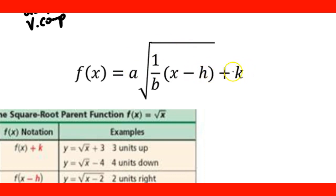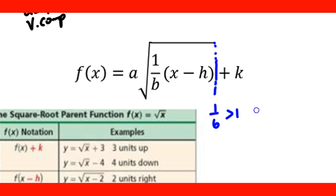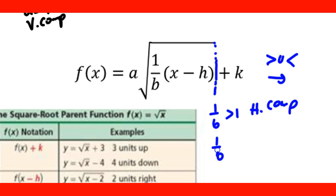One thing to note is that k is not underneath the radical. Now for the 1/b term: if 1/b > 1, there is a horizontal compression — the graph compresses inward and gets narrower. If 1/b < 1, there is a horizontal stretch — the graph gets wider.